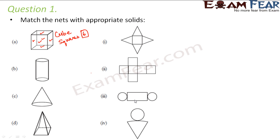Out of these options, where do you see a combination of six squares? You see it here. So that means the right net for a cube would be this one.